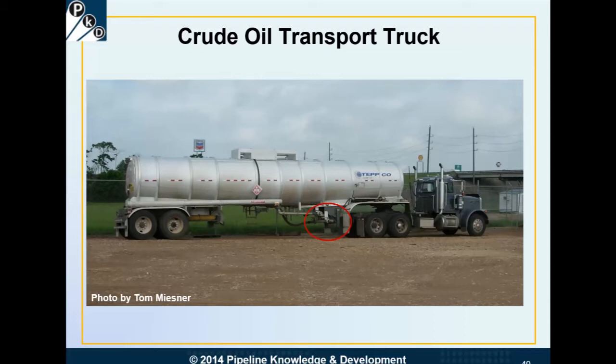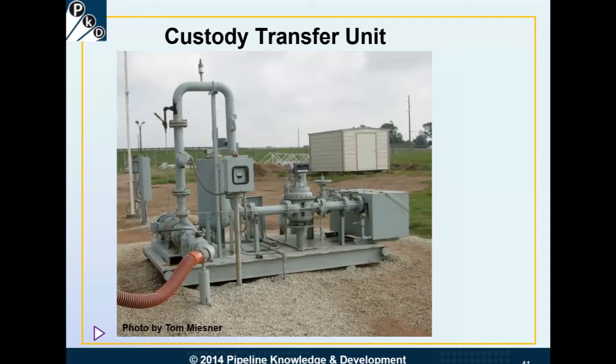The difference between how much was in the tank before they started and how much remains afterward is the amount taken out. It's very common to truck crude oil from production areas, particularly early in the life of a production area, before gathering pipelines have been built to take it to a central facility. Here's a picture of a custody transfer unit — the measuring unit that measures the crude oil coming off of the truck. On the left-hand side you can see an orange-colored hose, and looking back from there, a centrifugal pump driven by a motor.